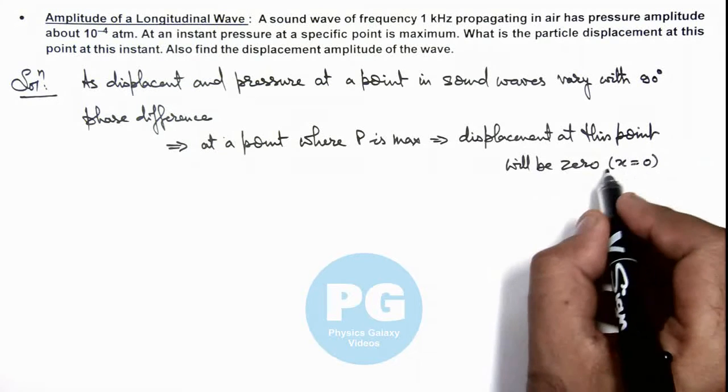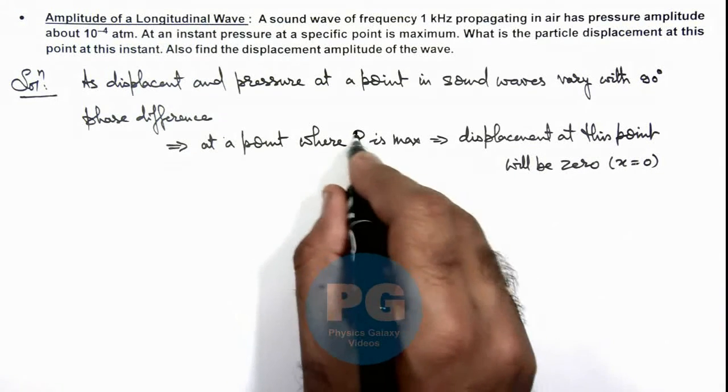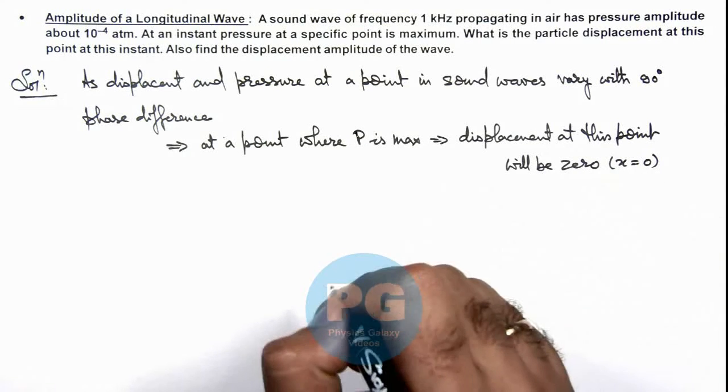Because if x varies in sine function, pressure varies in cosine function, so if p is maximum, the value of displacement will be zero.